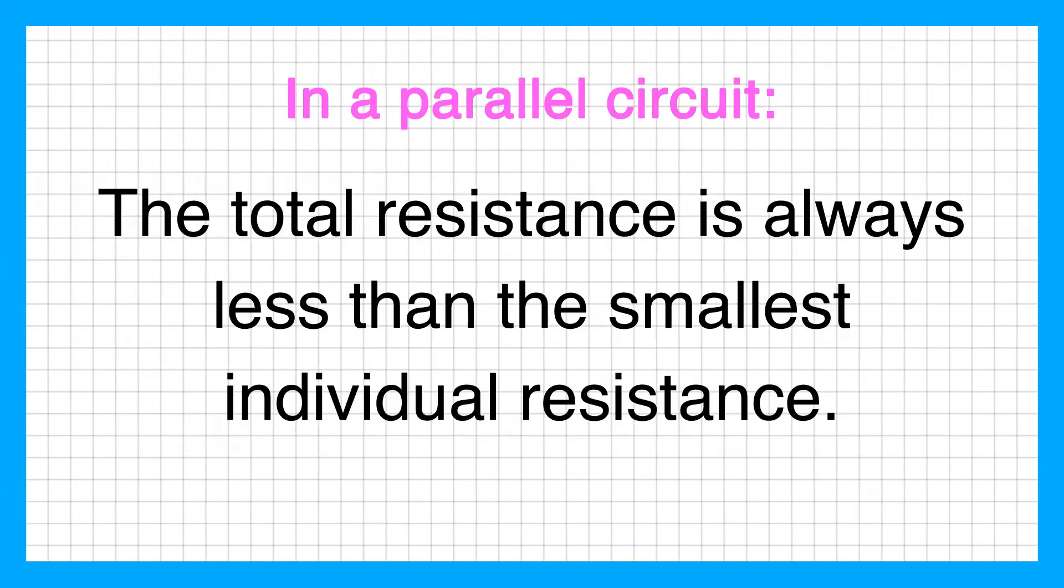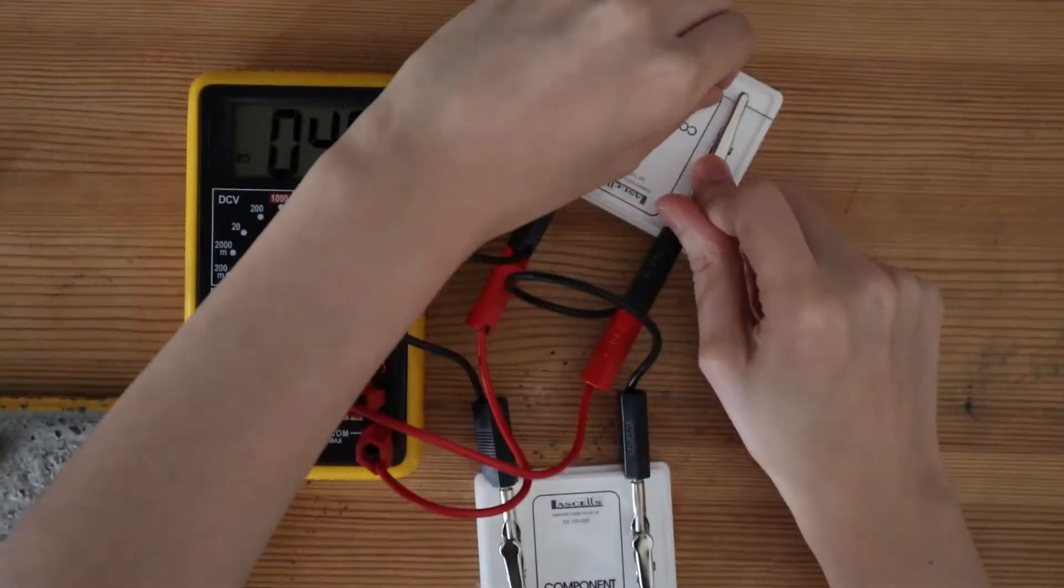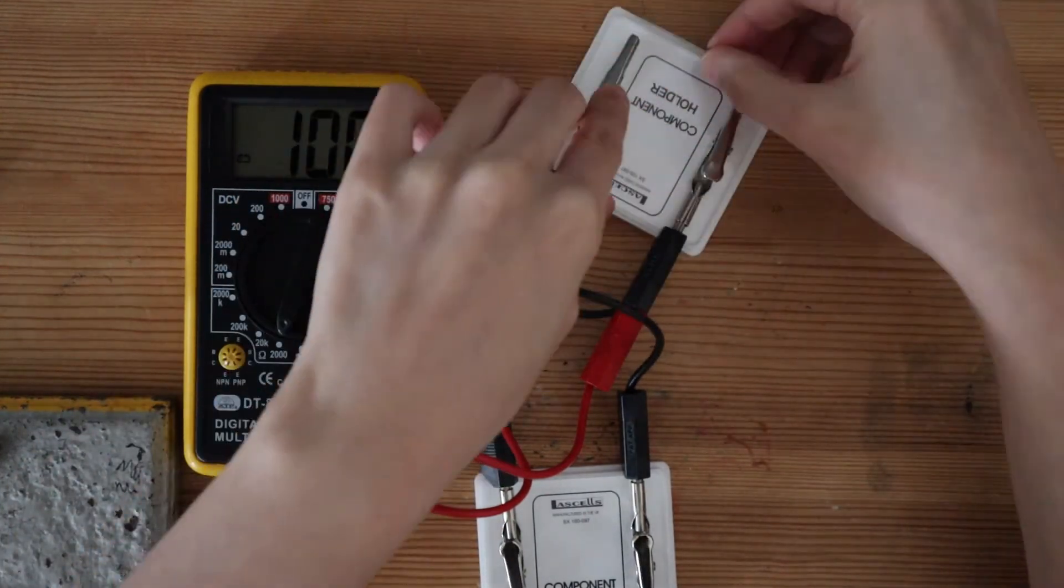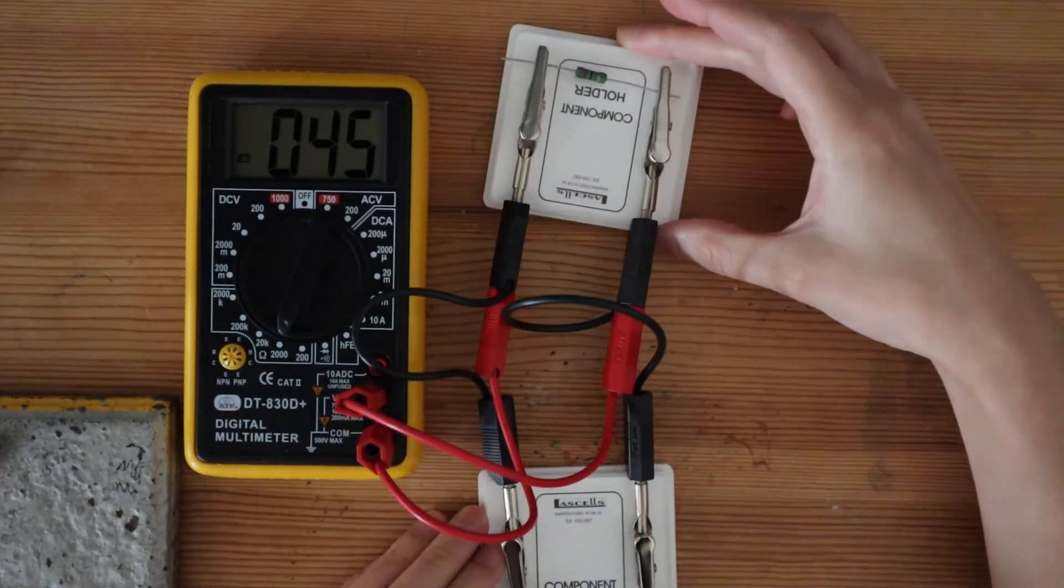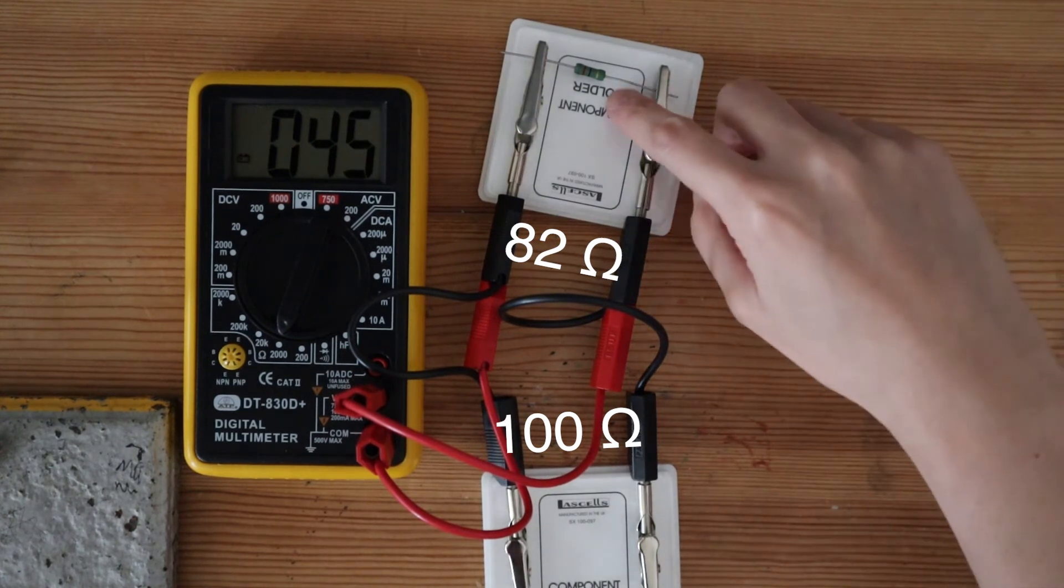In fact, the total resistance in a parallel circuit is always less than the smallest of the individual resistance. Instead of using these two resistors with 100 ohms each, I swap one of them out for an 82 ohm resistor. Then the total resistance must be less than 82 ohms.